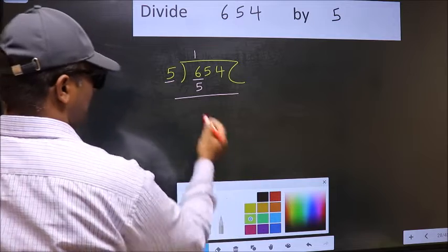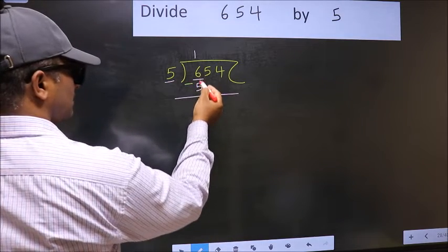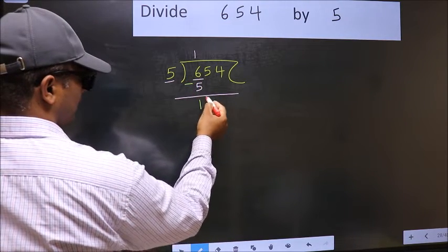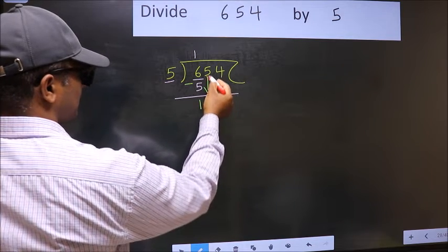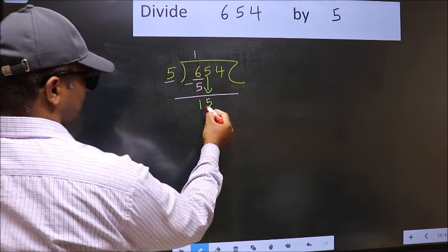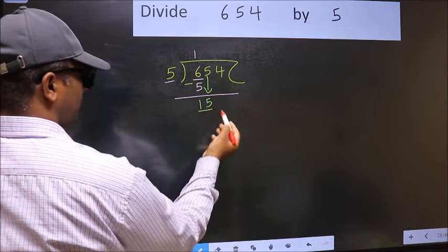Now you should subtract. 6 minus 5 is 1. After this, bring down the beside number. So 5 down. Now 15.